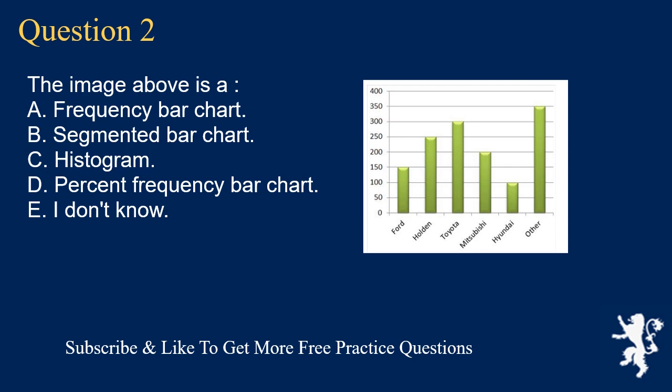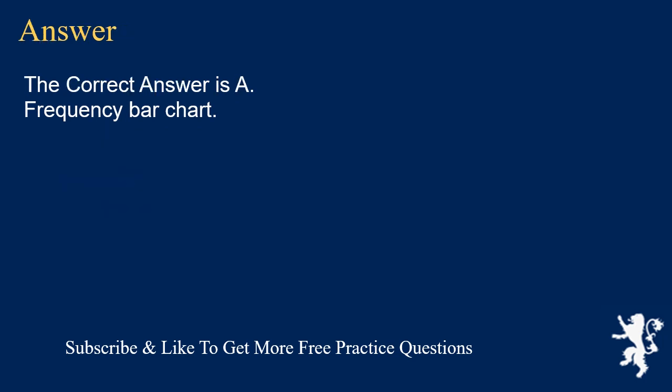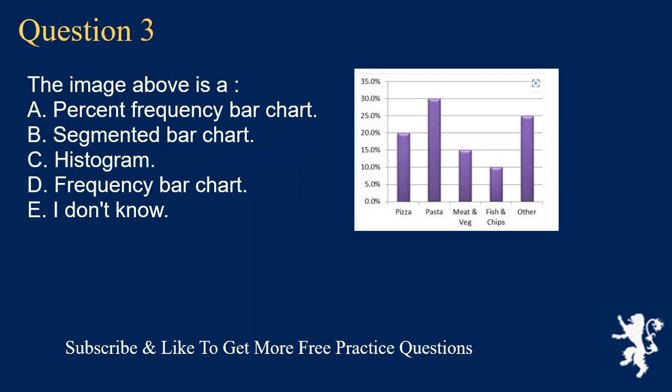Question 2: The image above is A. a frequency bar chart, B. segmented bar chart, C. histogram, D. percent frequency bar chart, E. I don't know. The correct answer is A, frequency bar chart.